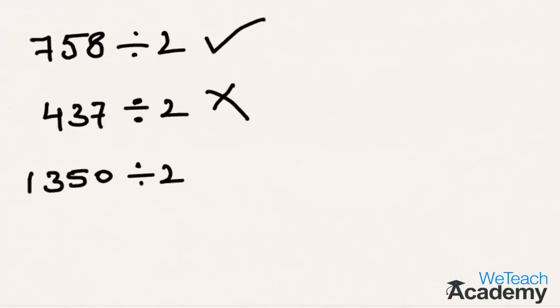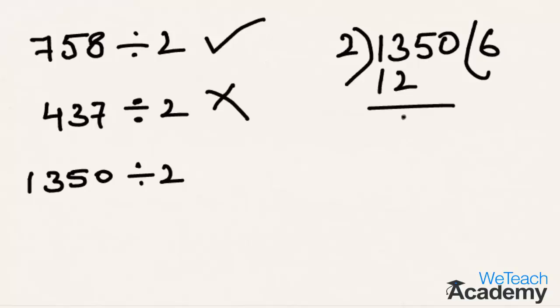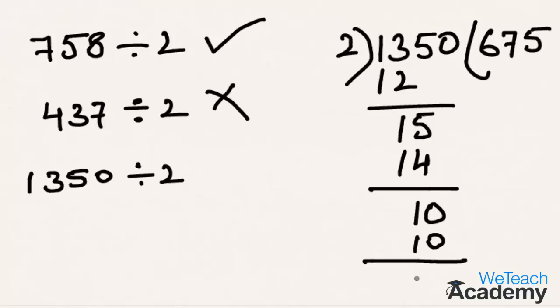Now let's go with the third example. Let's divide 1350 by 2. 2 times 6 is 12. Now 13 minus 12 is 1. Now bringing down the next digit, that is 5 here, we get 15. 2 times 7 is 14, so 15 minus 14 is 1. Bringing down the last digit, that is 0, we get 10. 2 times 5 is 10. Therefore, we get a remainder of 0.